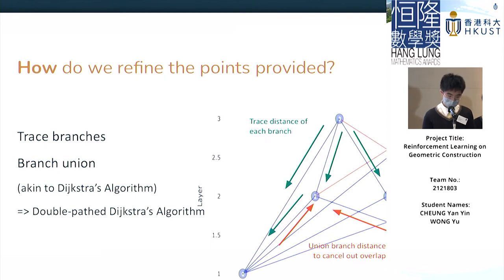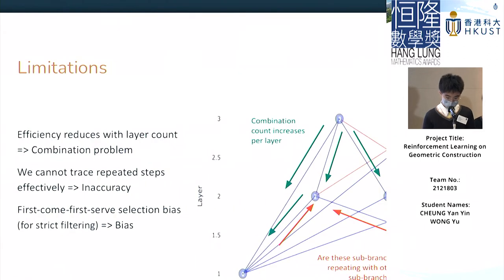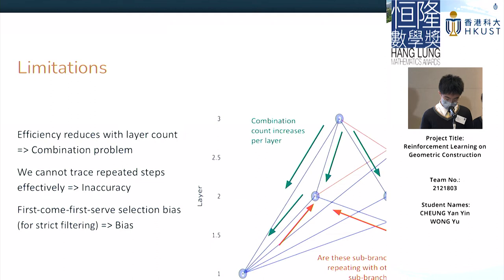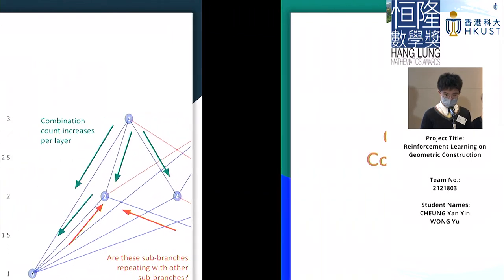This branch union method is akin to Dijkstra's algorithm, so we named it the double path Dijkstra algorithm, although we ultimately discovered it strays a bit from it. There are some limitations: it's quite inefficient as it has to iterate downwards repeatedly, giving roughly exponential complexity that cannot handle difficult tasks with good speed. We also cannot trace creative steps effectively, since the same action such as a circle can appear in several branches if it passes through several points, which is a limitation of our method.